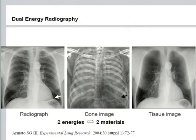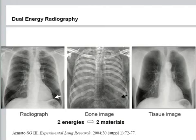Dual energy is a well-known principle in radiography. If you use two energies or two spectra with different KVP, you are able to reconstruct images of two different materials, like shown here — a soft tissue image and a bone image. That's exactly what Dr. Xi showed in his presentation with the scout.